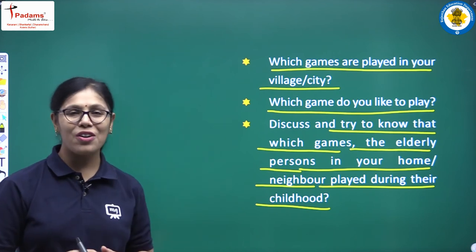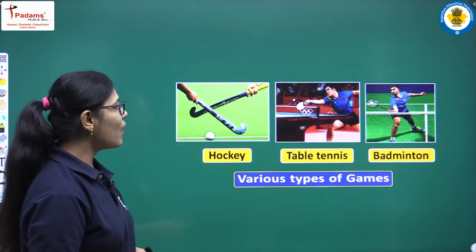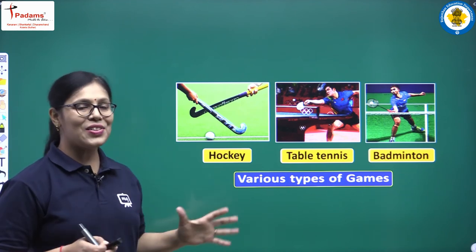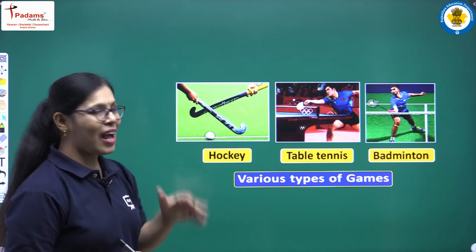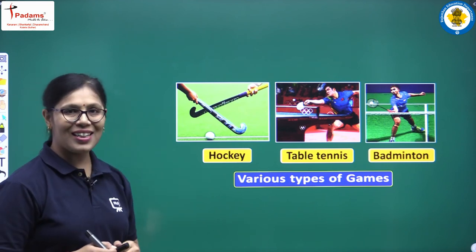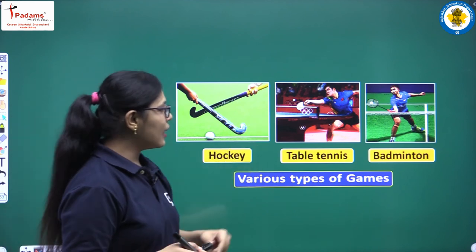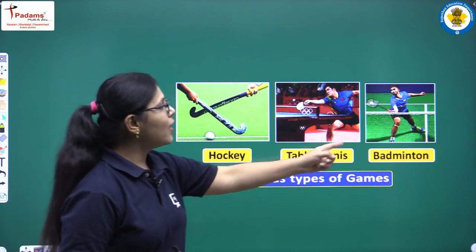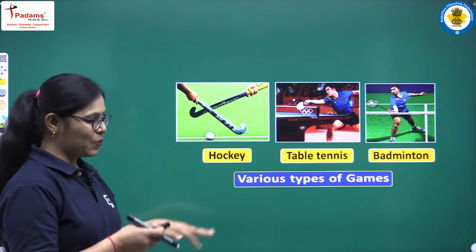These are a few questions — just discuss them with your parents and elders. Now, in this picture you can see various types of games. As you know, in this chapter we are going to talk about different kinds of games. There are three pictures showing famous games: the first picture shows hockey sticks and a ball; the second shows a player playing table tennis; and the third shows a player playing badminton.